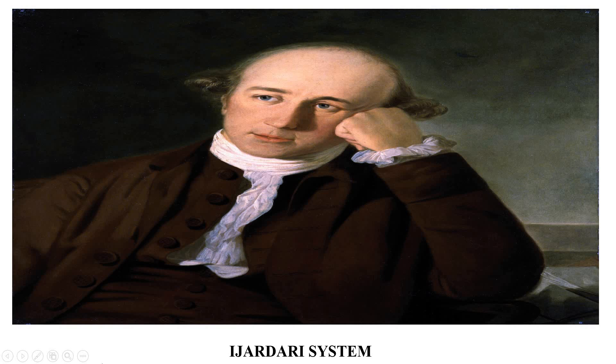The Ijardari system was introduced during the tenure of Warren Hastings. It is also known as the system of auction because the land was given to the highest bidder. In order to take possession of land, most bidders offered more than they could actually pay. They did not cultivate the land themselves. They had tenants or small farmers to do it for them. The condition of these farmers always remained miserable because the bidders could extract the maximum revenue from them.